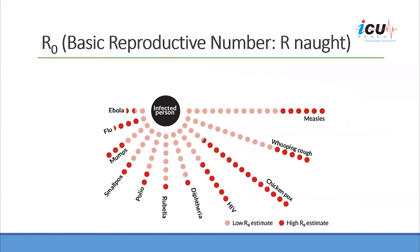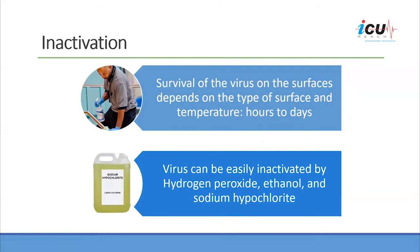The R0 — basic reproductive number — tells us how many patients get infected after exposure to a single case. For influenza, it is between 1 and 4.5 depending on the season. For measles, it is the highest, between 12 and 18. For COVID-19, it is between 2 and 3. The virus can live on surfaces for a few hours to a few days depending on the surface type and temperature. Higher temperatures are postulated to kill the virus faster. Viruses can be easily inactivated by hydrogen peroxide, ethanol, and sodium hypochlorite.